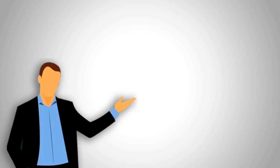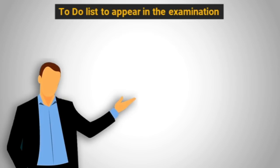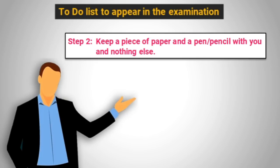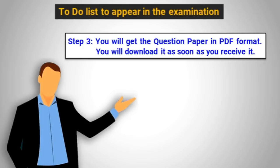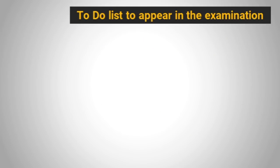Now let me give you step-by-step details of what you have to do to appear in the examination. Step 1: Be online on the appointed time as per the routine. Don't miss it. Step 2: Keep a piece of paper and a pen or pencil with you and nothing else. Step 3: You will get the question paper in PDF format. You will download it as soon as you receive it.